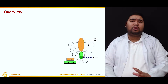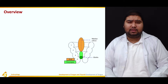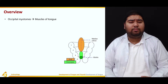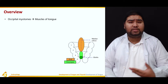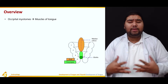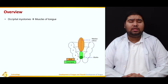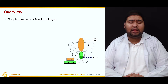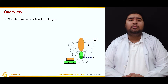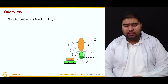First of all, let's talk about the muscular component of the tongue. The muscular component of the tongue is actually formed by the occipital myotomes. The myotomes that lie in the occipital region migrate and help in the formation of the muscular components of the tongue.